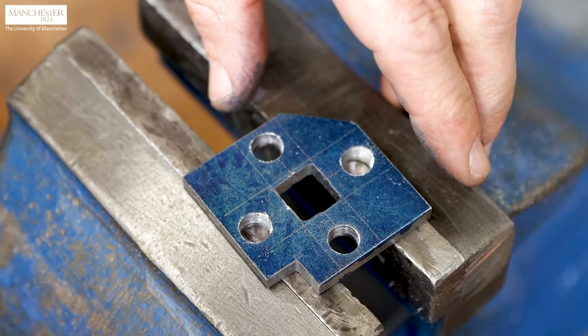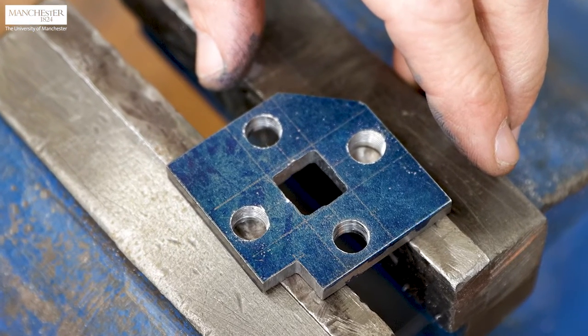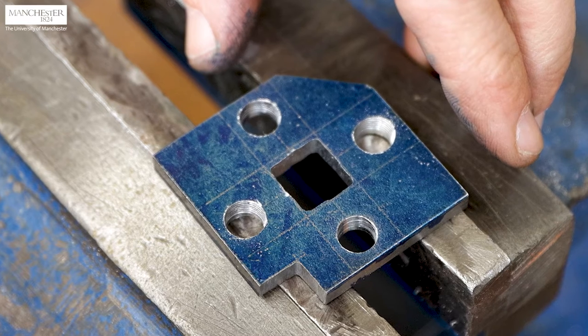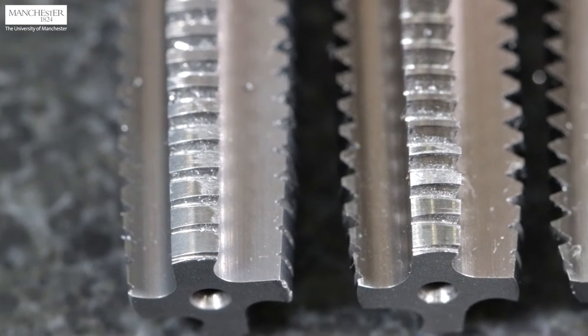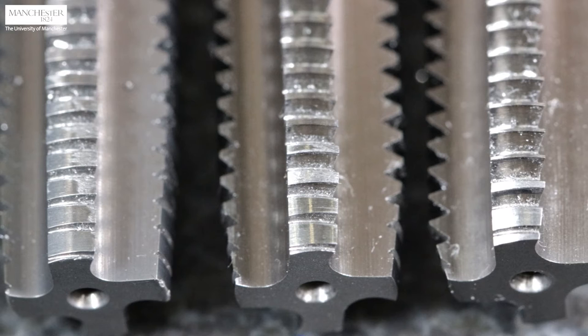The final step is to open the threads in the smaller holes. We will produce two M10 x 1.5 tapped holes. For this purpose, we will use this three-piece M10 x 1.5 hand tap set with taper number one, the second number two, and the plug number three taps. The taps have different forms to aid ease of producing the full form threads in the material.